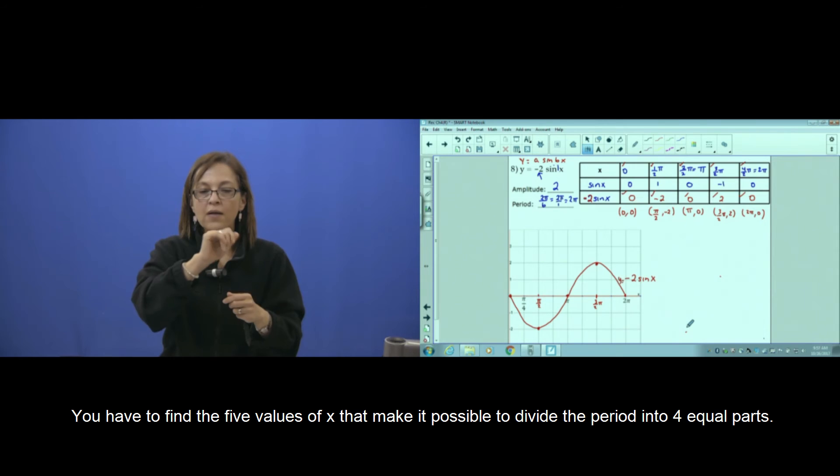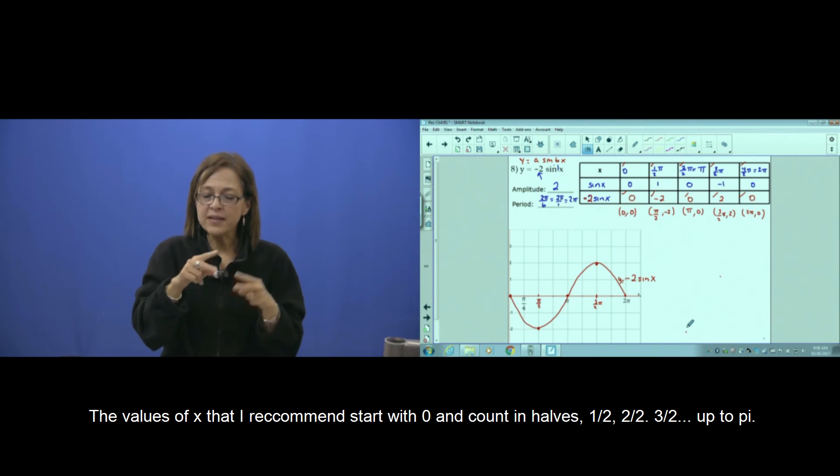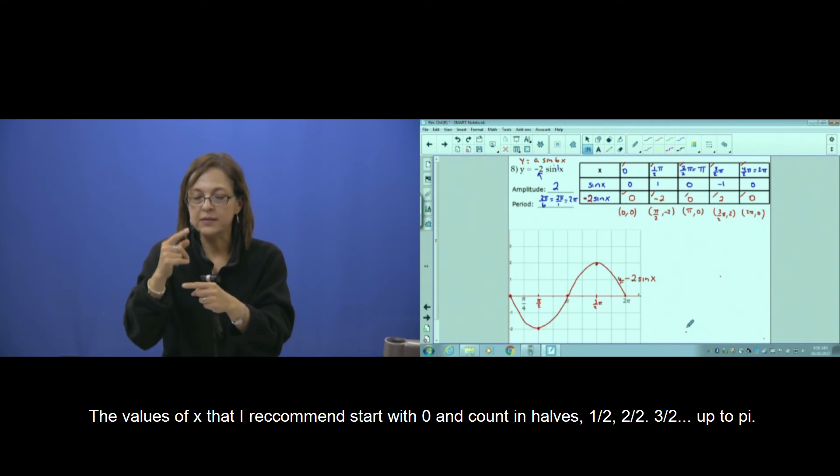You have to find the 5 values of x that make it possible to divide the period into 4 equal parts. These values of x that I recommend start with 0 and count in halves: 1 half,